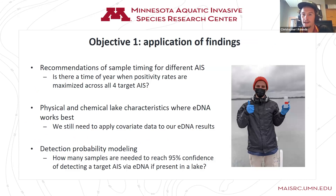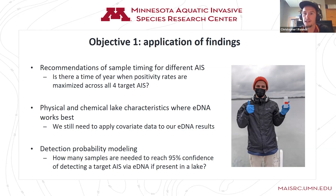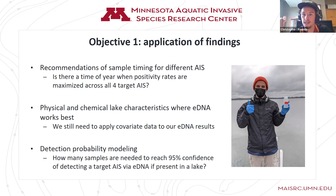The application of our findings from objective one will importantly address where or when we can sample to maximize our ability to detect. If you're going out to a lake and want to know what AIS are present, this tells you when you can get the most bang for your buck in terms of sampling. Physical and chemical characteristics can be pretty important in eDNA sampling. We'll be looking at what water quality parameters are more conducive to effective eDNA sampling — for example, whether clearer lakes have less PCR inhibition.